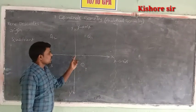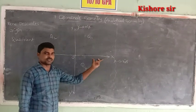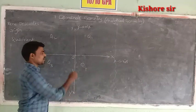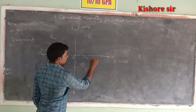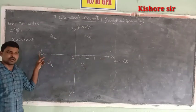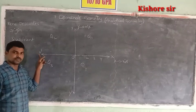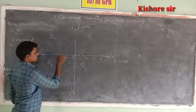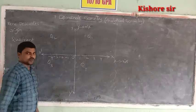OX is the positive direction of the x-axis. So take some positive integers on OX: one, two, three, four. And OX dash is the negative direction of the x-axis. So take some negative integers on OX dash: minus one, minus two, minus three, minus four.